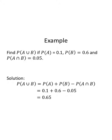Here's an example using our union rule. Find the probability of A union B if probability of A is 0.1, probability of B is 0.6, and probability of the intersection is 0.05. The probability of the union is 0.1 plus 0.6 minus 0.05. I think of it as money: 10 cents and 60 cents makes 70 cents. If I subtract off a nickel, I'm down to 65 cents. Probability is 0.65.